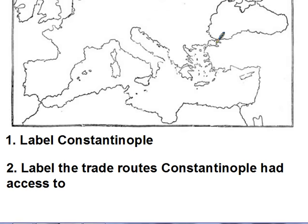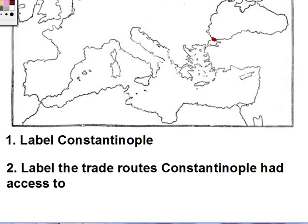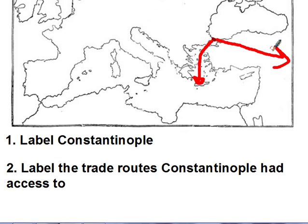Make sure you can label Constantinople on a map. Here's Constantinople — it's the bridge between Europe over here and Asia over here, like Persia, Asia Minor, the Middle East, and Europe. That's why it's such an important city. When we talk about trade, Constantinople has access to the Mediterranean Sea and all the trade that entails. They also have access to the Silk Road, which leads into Asia.